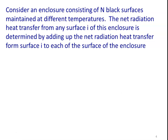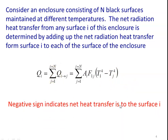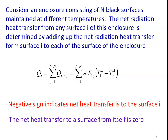For an enclosure of n black surfaces maintained at different temperatures, the net radiation heat transfer from any surface i is determined by summing net radiation heat transfer from surface i to each surface in the enclosure: Qi = Σ(j=1 to n) Ai·Fij·σ·(Ti⁴ − Tj⁴). A negative value indicates net heat transfer to surface i; net heat transfer from a surface to itself, Qii, equals zero.